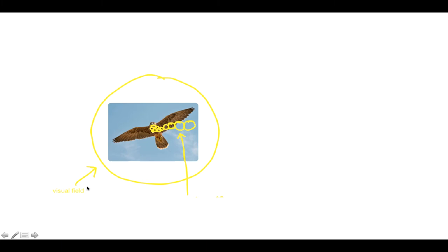If you remember, we looked at this example of watching a bird fly — in this case, a falcon — and we can think of that as being everything that's in our visual field. We're looking at this bird up in the sky. The way this works is that this item then ends up getting projected onto our visual cortex.